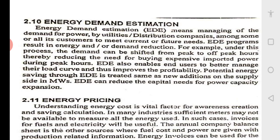I then studied the previous electricity bills of the college — the historical energy use. When I examined that historical energy use, I found that the actual peak demand was less than 60 kVA. But we were paying every month for 150 kVA, and for each kVA we pay around 200 rupees — so almost 30,000 rupees per month as a fixed charge, whether we use electricity or not.